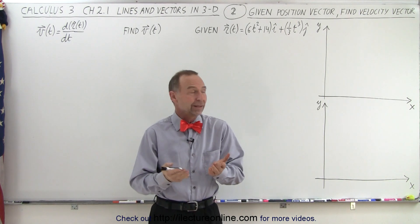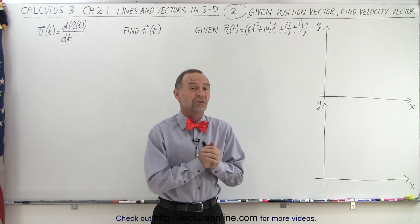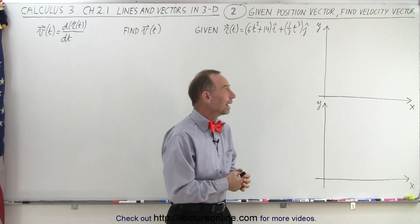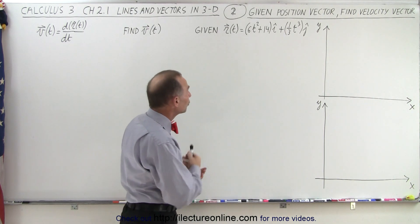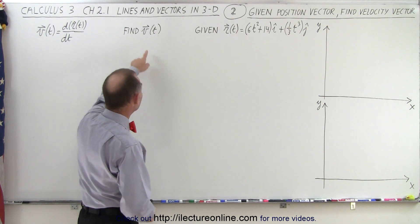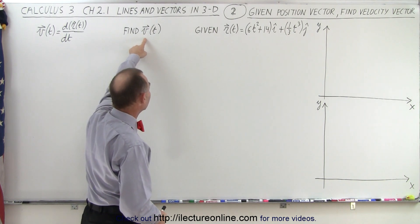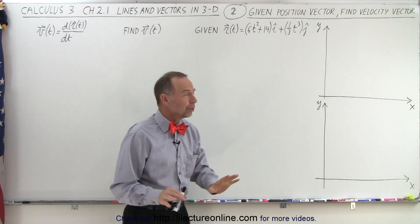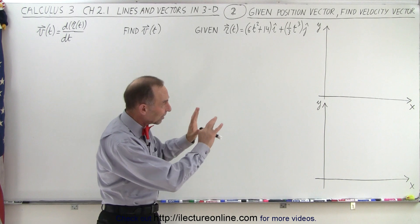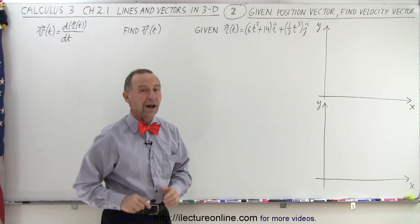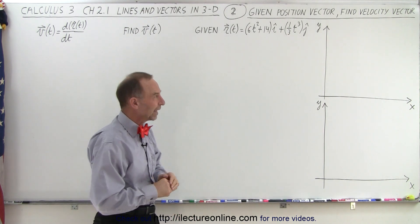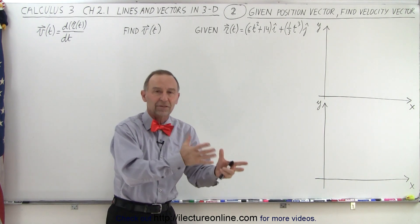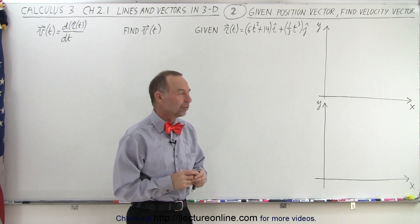To do that, let's familiarize ourselves with vector notation. We're going to find the velocity vector given a position vector. We'll do it in two dimensions so that it's easier to graph and see what that looks like, though of course it extrapolates out to three dimensions as well.